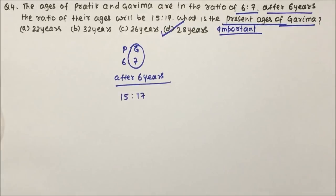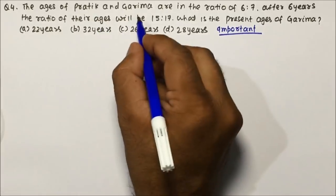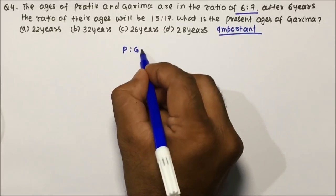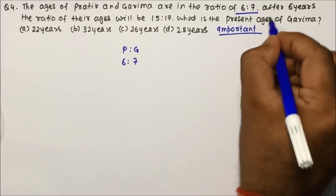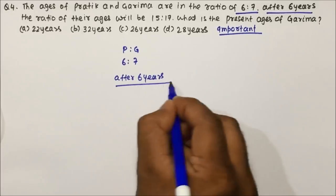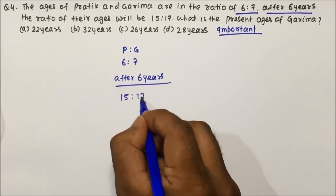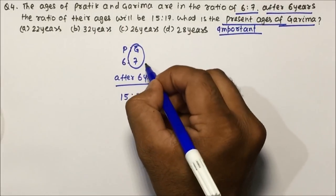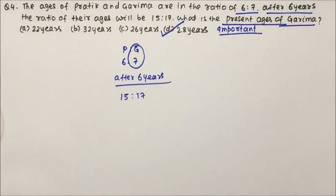Let us move to question number 4, which is similar to question number 3. The ages of Pratik and Garima are in the ratio of 6 is to 7. After 6 years, the ratio will become 15 is to 17. What is the present age of Garima? The present age of Garima will be a factor of 7, so only option D will be a multiple of 7. Therefore option D is the correct answer for question number 4.